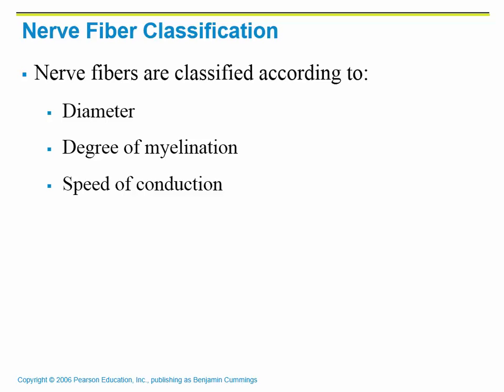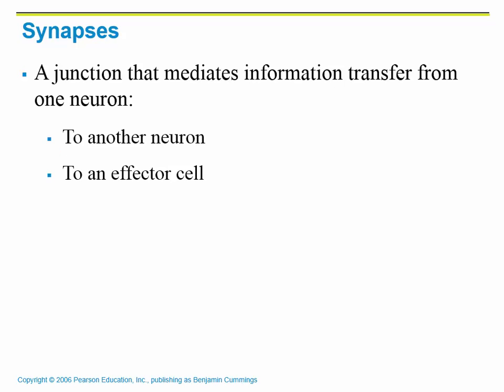Whether it's another neuron or a cell of an organ, neurons are classified according to diameter, degree of myelination — remember that there are some unmyelinated neurons — and speed of conduction.